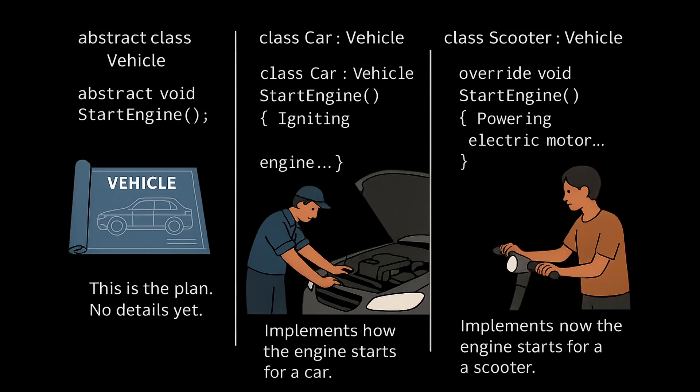We're not committing to any particular implementation — no details yet on how things will work. Now, let's say we build an actual car from the blueprint. We create a class Car which inherits from Vehicle. This time, the Car knows exactly how its engine should start — the StartEngine method is implemented by igniting the engine. But the vehicle could be different: maybe a scooter, which doesn't ignite like a car. Scooters might power an electric motor, so we create another class Scooter, also inheriting from Vehicle, and override StartEngine to power the electric motor.